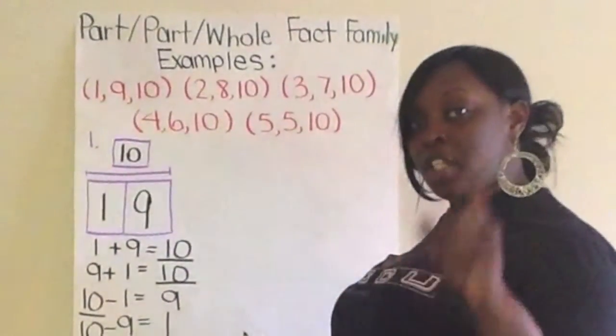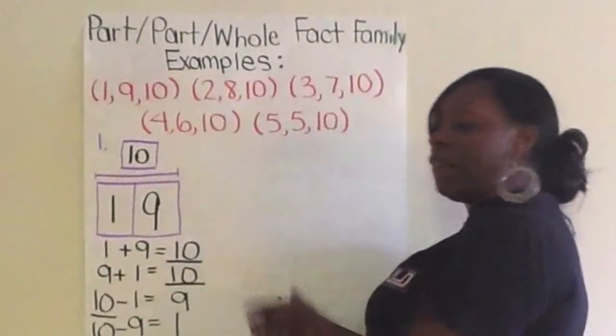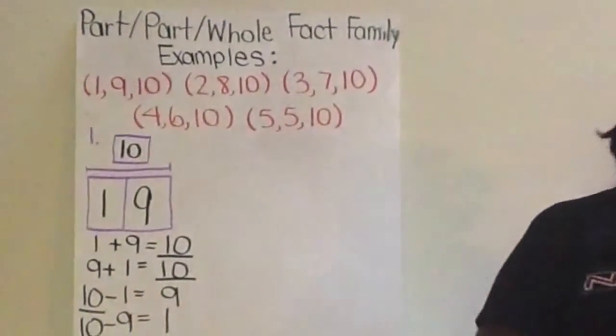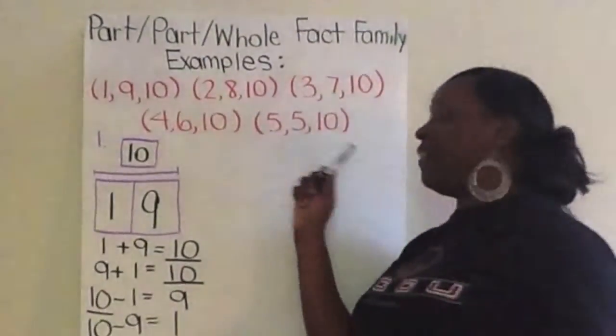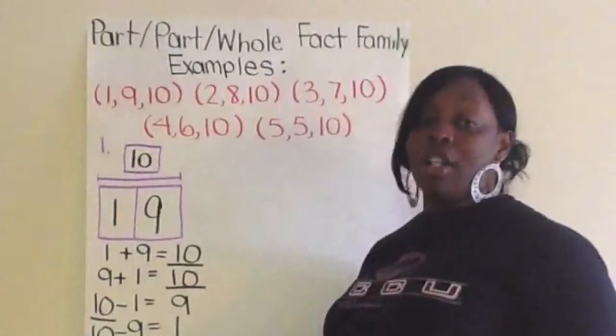The only difference you're going to have is anytime you have a doubles problem. So, for example, with your 10 facts, we see that the doubles 5, 5, and 10. A double is just a fact where the two numbers you're adding are the same.